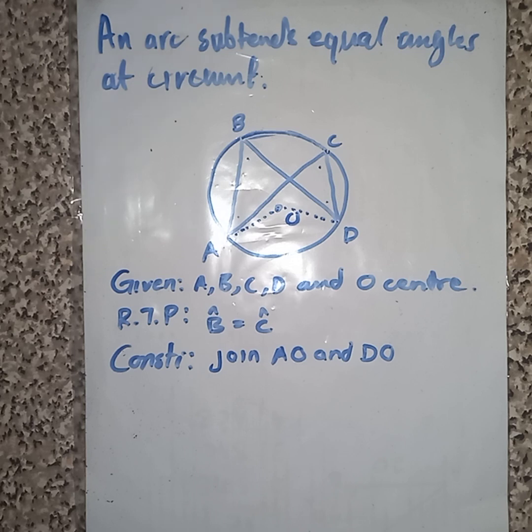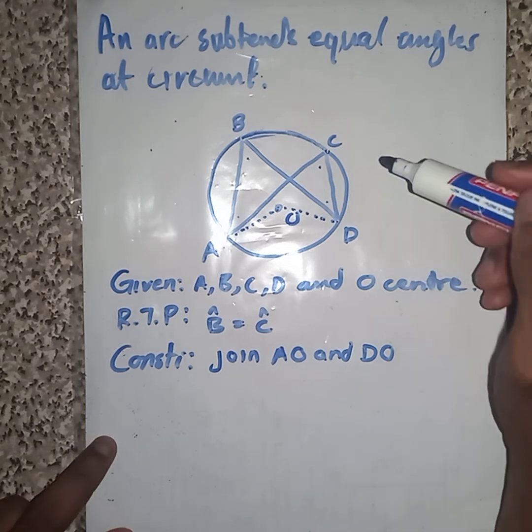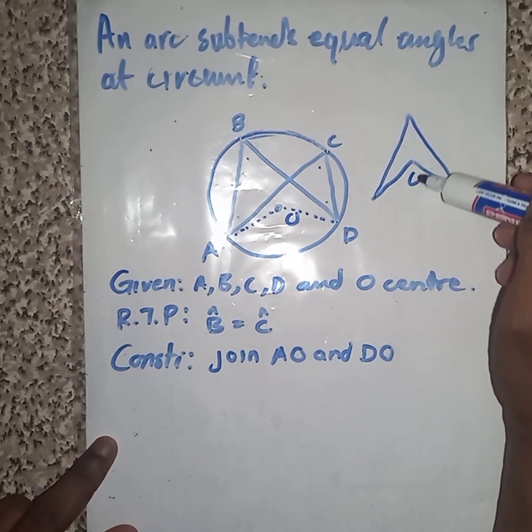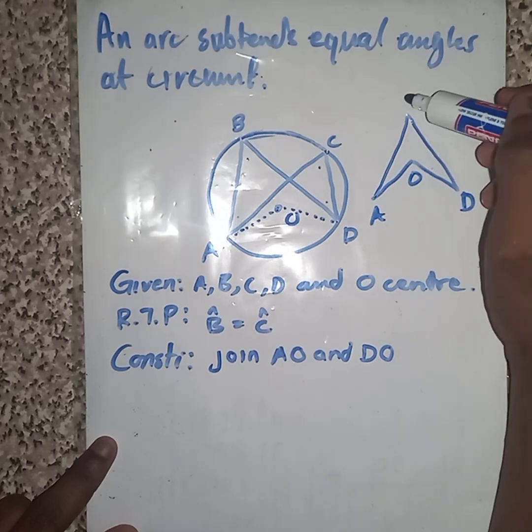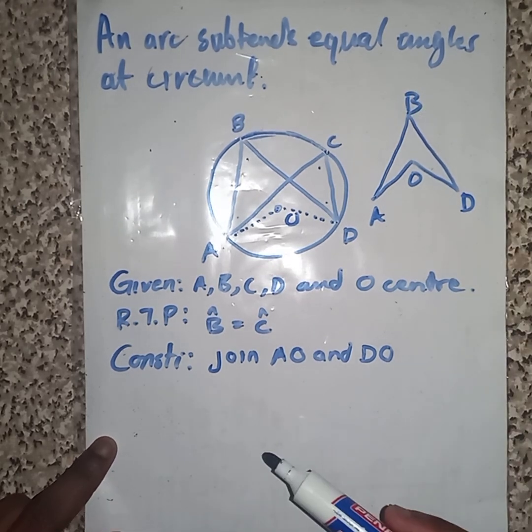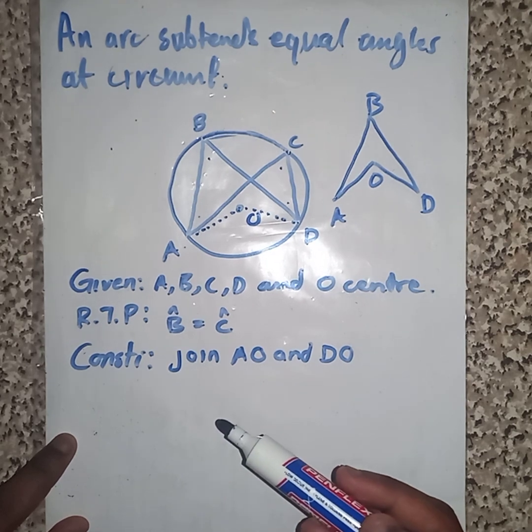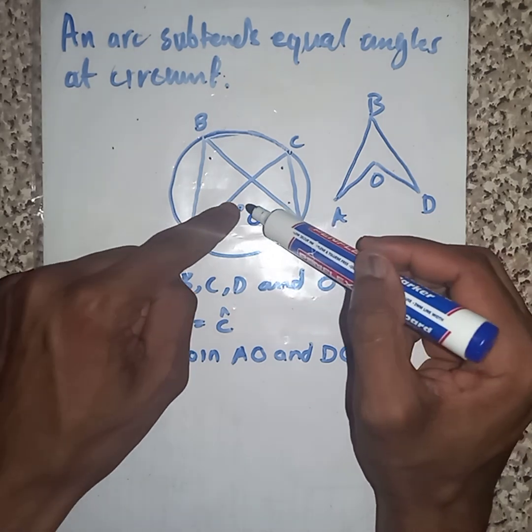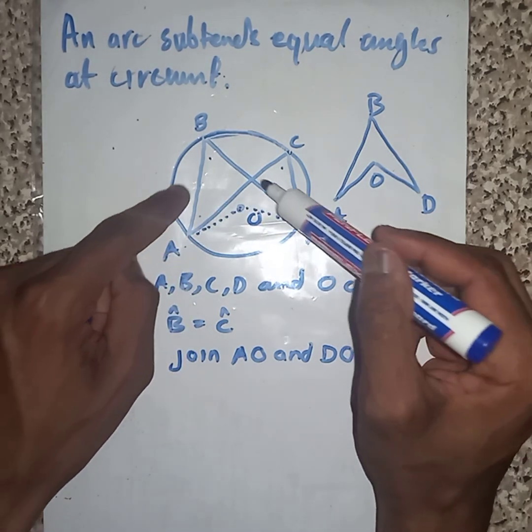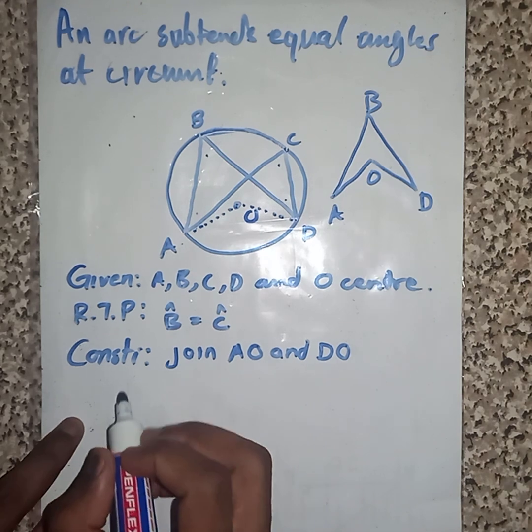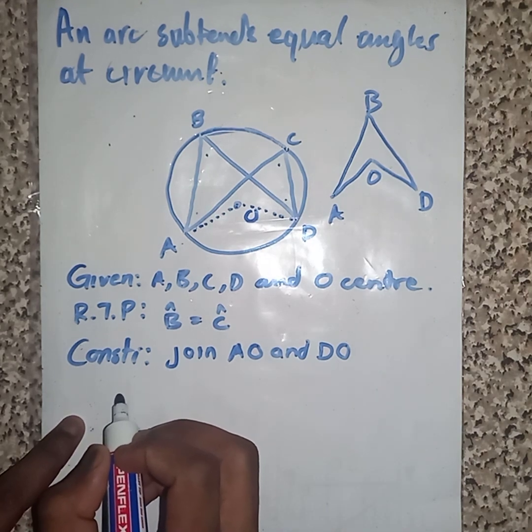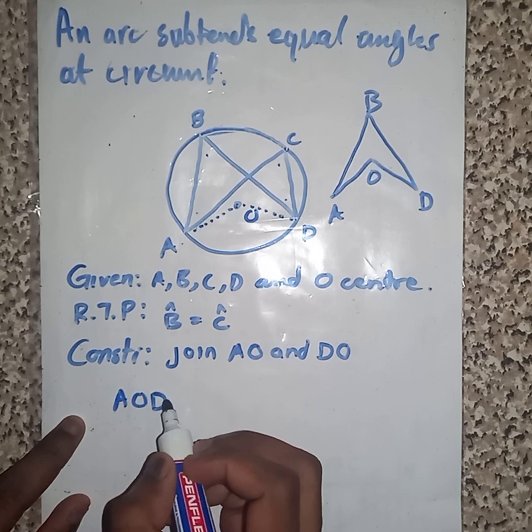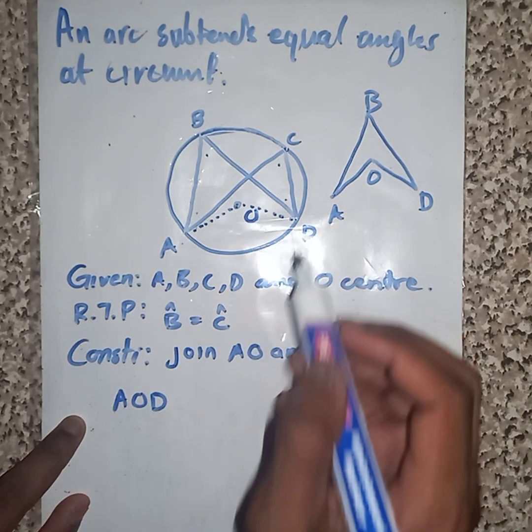Then immediately after joining this one, look carefully. Do you see this theorem? You have O, A, D together with B. You still remember this theorem, theorem number two? The angle at center, which is angle at center, is towards the angle at circumference. Then we are going to say, let me say, AOD...